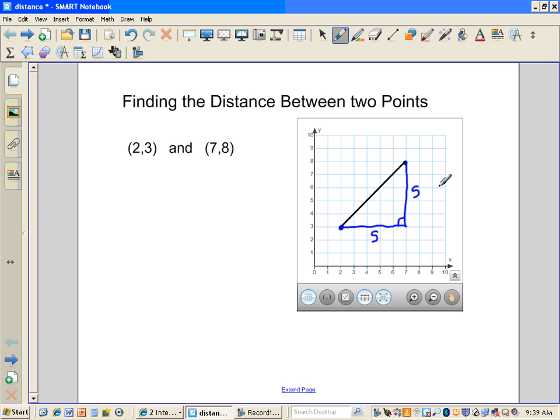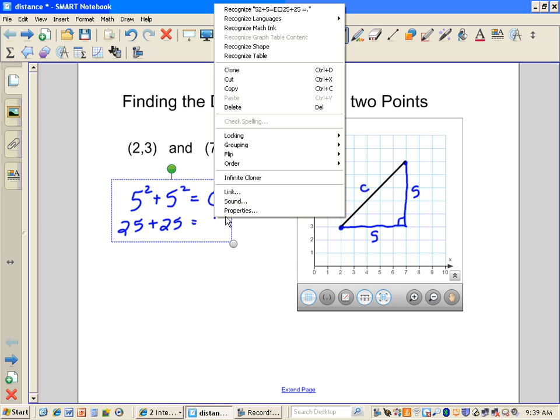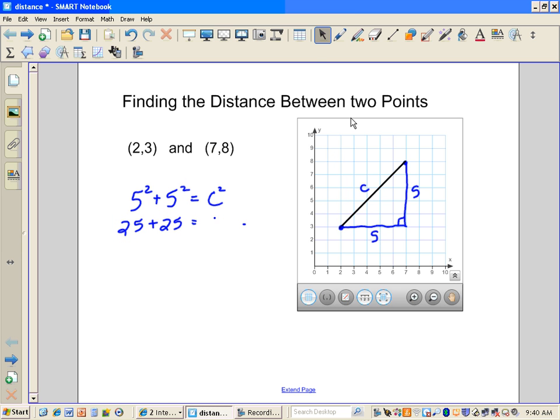And so we can say, well, I know that because this is a right triangle, that 5 squared plus 5 squared should give me that distance over here of C that I'm trying to find. Well, that's going to be 25 plus 25 is equal to C squared.